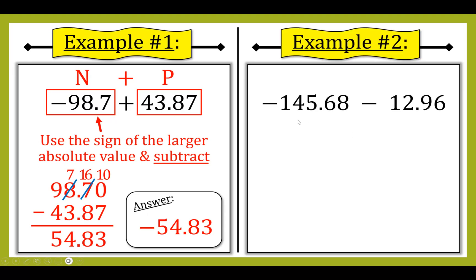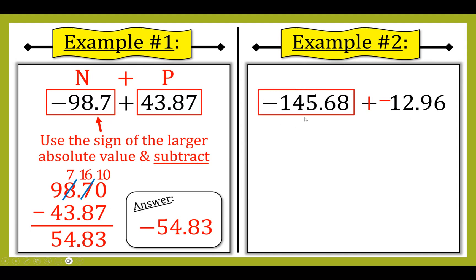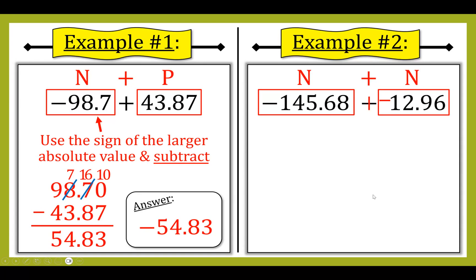Let's look at another example: negative 145.68 minus 12.96. This is a subtraction problem, but I can change it into an addition problem by adding the opposite. So now I have negative 145.68 plus negative 12.96. I box my numbers so I can see the addition problem clearly — it's a negative plus a negative, so my outcome is going to be negative and I'm going to add.